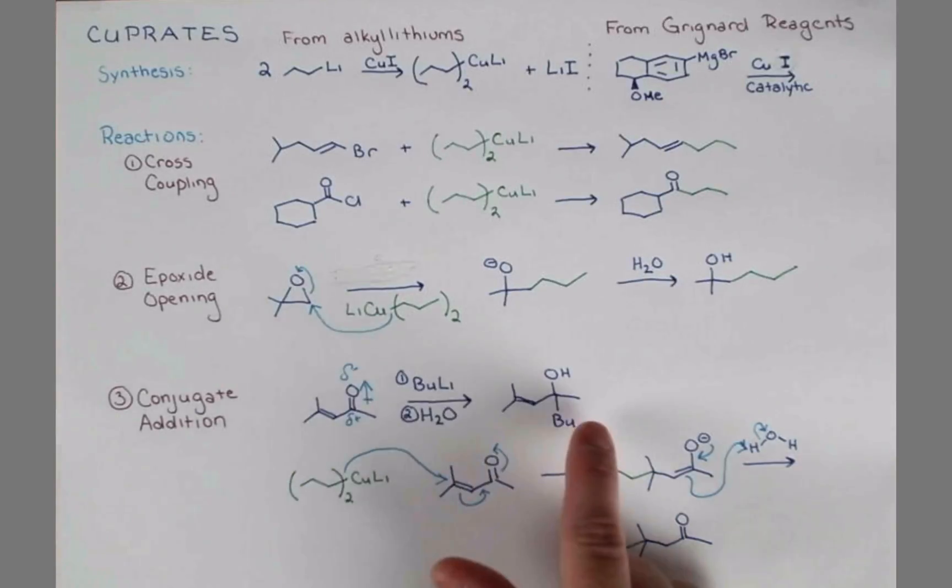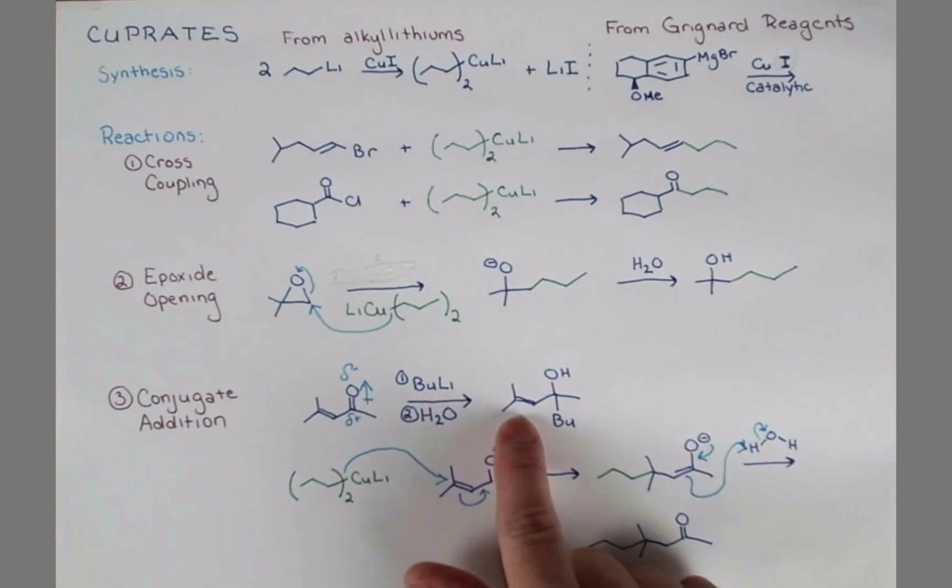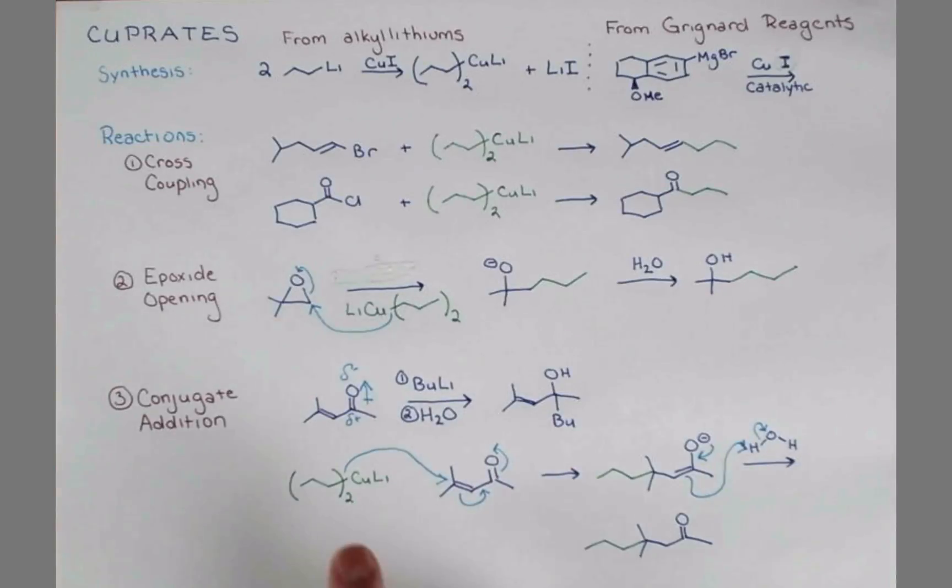We can actually react butyl lithium or a corresponding Grignard reagent and have it attack at the carbonyl, leaving the double bond intact. If we use the cuprate, we lose our double bond but still have our carbonyl.